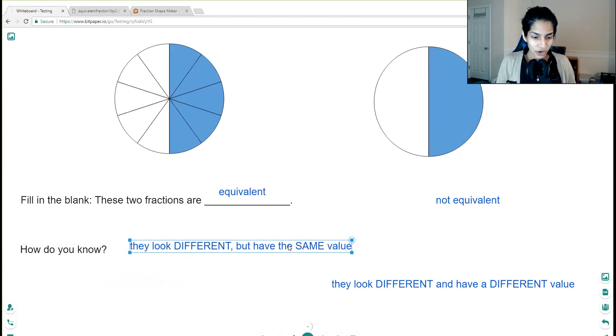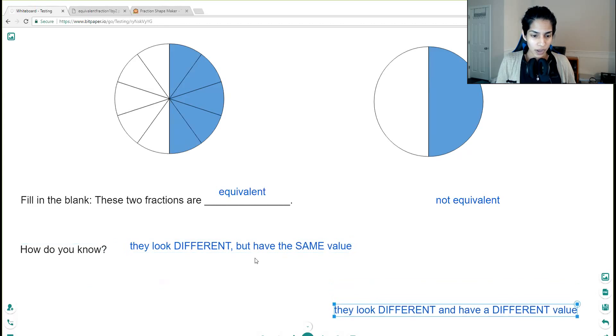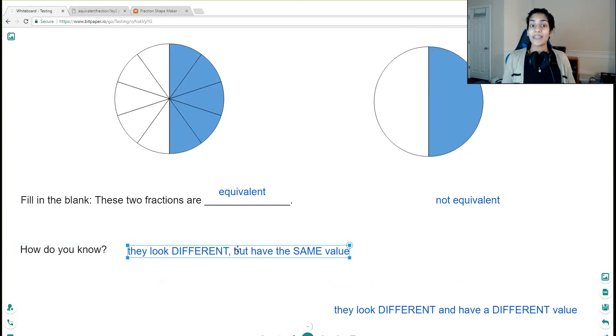So in this case, the correct answer would be this one. They look different, and they look different because the first circle has ten parts, and the second circle has two parts. So yes, they look different, but they have the same value. So if I look at these two shapes, and I just imagine it was something else like a pizza, I can cut the same size pizza in ten parts, and I can cut that pizza into two parts.